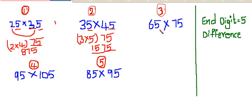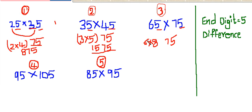See one more example. Here also the first two digits are 5 and the difference is 10. So the first two digits are 75. And 6 into the next digit of 7, that is 8. 6 times 8 is 48. So 4875 is the answer.